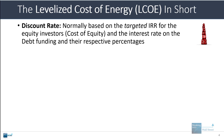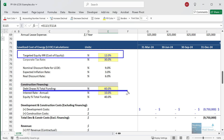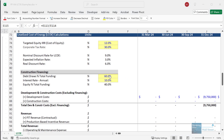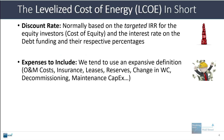The discount rate in this calculation is normally based on the targeted IRR for the equity investors, the interest rate on the debt funding, and their respective percentages. So if equity investors are targeting a 12% return, that's the cost of equity. If the interest rate on the debt is 10%, that's the cost of debt. The debt and equity percentages are based on the initial project funding — for example, 60% debt and 40% equity. With expenses, we tend to use a more expansive definition including not just operating and maintenance costs, insurance, and leases, but also reserves, change in working capital, decommissioning cash outflow, and maintenance capex during the holding period.